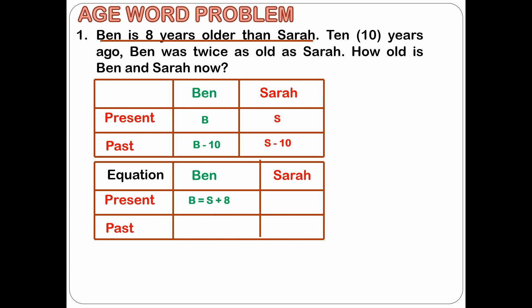Now we will write the equations for the past. 10 years ago, Ben was twice as old as Sarah, so it means that B minus 10 is equal to 2 times S minus 10. From the problem, we identify 2 equations and we have 2 variables. Keep in mind that whenever you have 2 unknown variables, you need 2 equations to solve for those 2 variables.